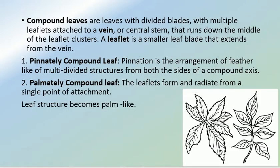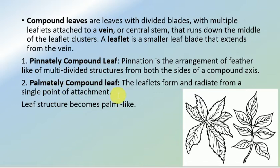The next type is the compound leaf. Unlike the simple leaf, the compound leaf has a divided leaf blade — it is not a single unit but is made up of multiple leaflets. This kind of arrangement, in which the leaf blade is divided into small pinnae or leaflets, is known as the compound leaf. Based on the arrangement of the multiple leaflets, compound leaves are of two types: the pinnately compound leaf and the palmately compound leaf.